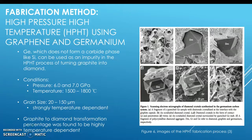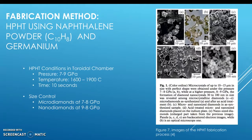Another fabrication method put forward by Pavlinov is high pressure, high temperature transformation of graphene into diamond, requiring pressures of six to seven gigapascals and rather high temperatures, creating grain sizes on the order of micrometers — micro diamonds. Akamov uses similar methods but replaces graphene with naphthalene powder (C10H8), and has control over size with pressure modulation: from seven to eight gigapascals you get micro diamonds, and from nine to ten gigapascals you get nano diamonds. This method takes on the order of about 10 seconds, whereas the HPHT method takes hours.